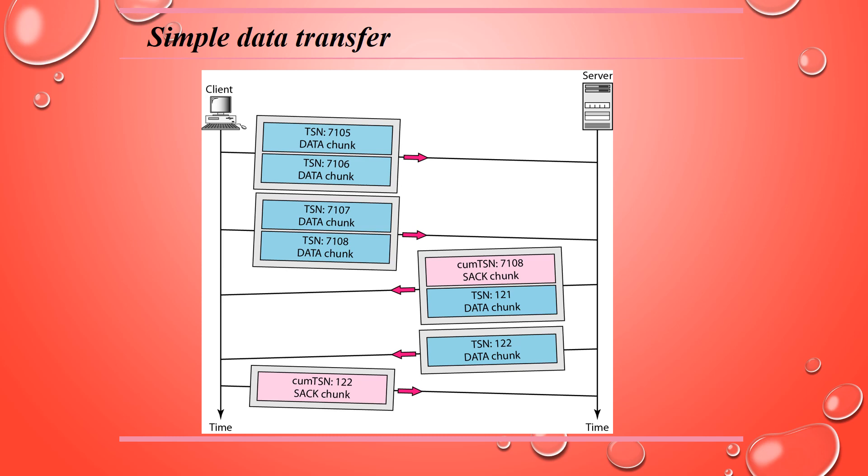Multi-homing allows both ends to define multiple IP addresses for communication. Only one of these addresses can be defined as the primary address; the rest are alternative addresses. The primary address is defined during association establishment. Importantly, the primary address of one end is determined by the other end — the source defines the primary address for the destination.